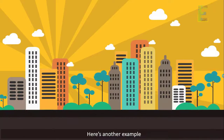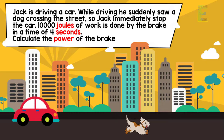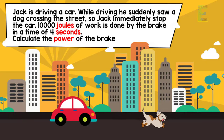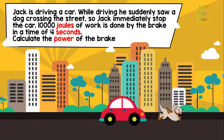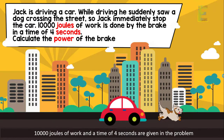Here's another example. Jack is driving a car. While driving, he suddenly saw a dog crossing the street, so Jack immediately stopped the car. 10,000 joules of work is done by the brake in a time of four seconds. Let's calculate the power of the brake. The given values are: work = 10,000 joules and time = 4 seconds.